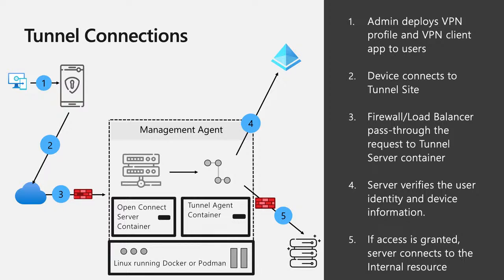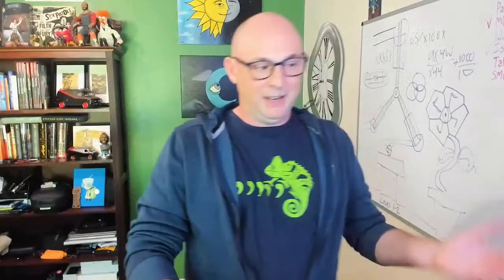Bob logs in with whatever auth requirements we have — strong auth, multi-factor, authenticator — that would kick in. Then we also check if his device is compliant. If the device is compliant, access is granted and that server will create a connection for that user to get the internal resource. Depending on how you deploy all this, this could be completely transparent to the user — it could launch on demand, or something they have to go in and launch manually.